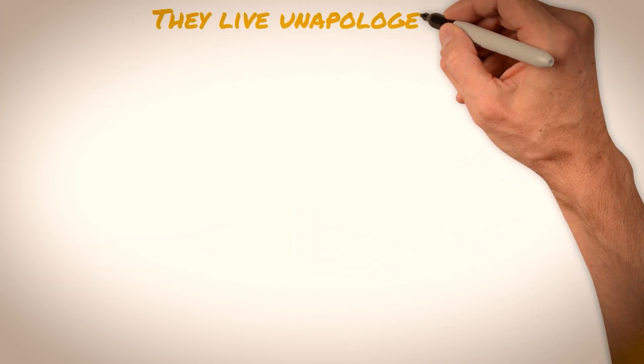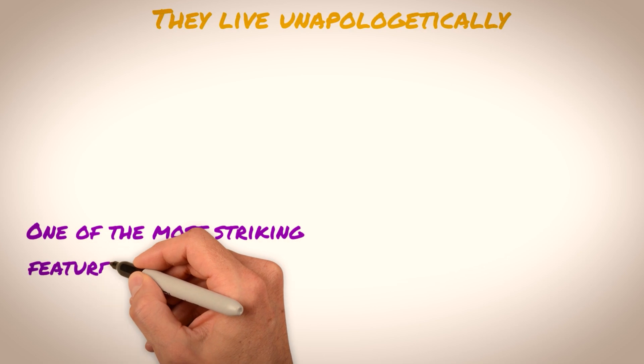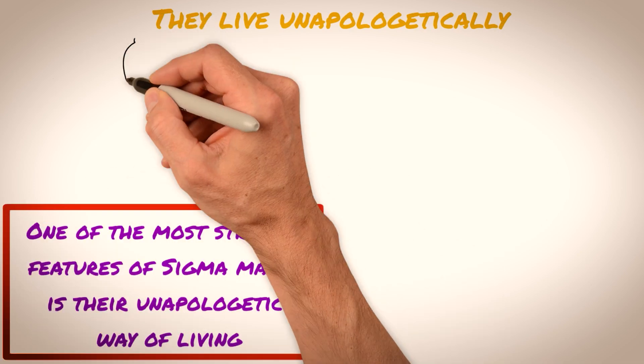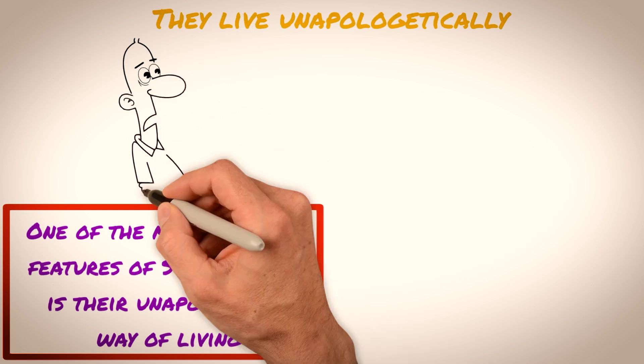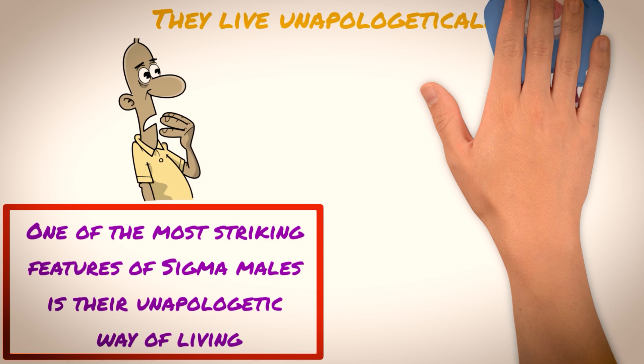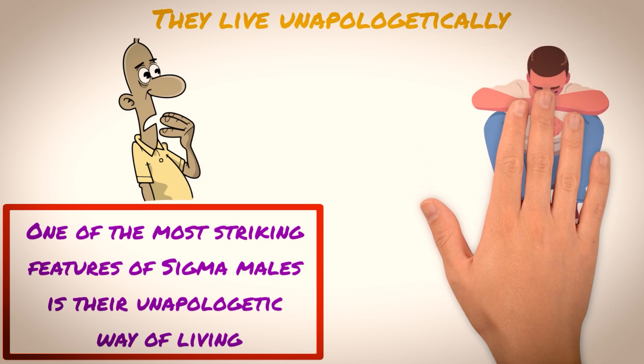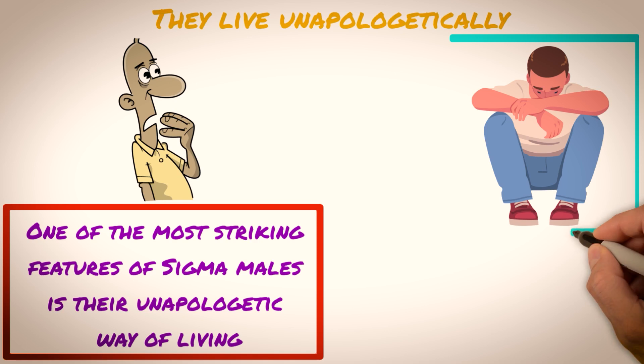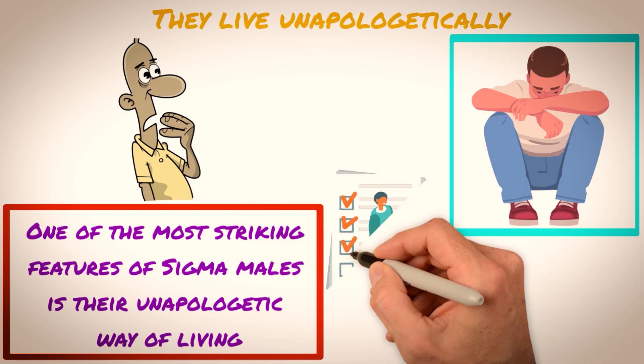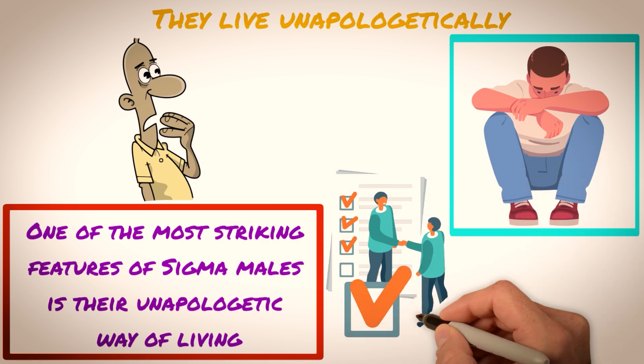They live unapologetically. One of the most striking features of Sigma males is their unapologetic way of living. They are not afraid to be themselves and will not change to fit in with societal norms or expectations. This sense of self-assurance can be intimidating to some people, especially those who are used to conforming to the status quo. Sigma males are not interested in seeking approval or validation from others, as they are comfortable with their own beliefs and values.